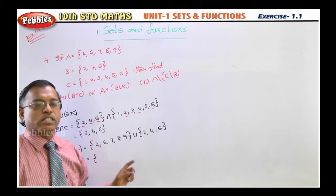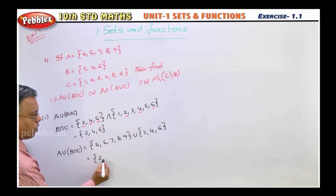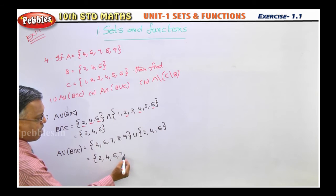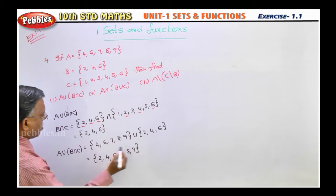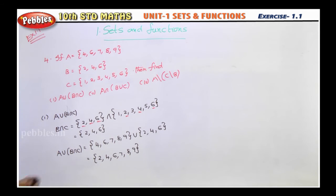So union means what I told: every element we should write, starting from the lowest to highest. So now, 2, 4, 6, 7, 8, 9. So that finishes your A union B intersection C. Very simple. Just you have to do the operations.